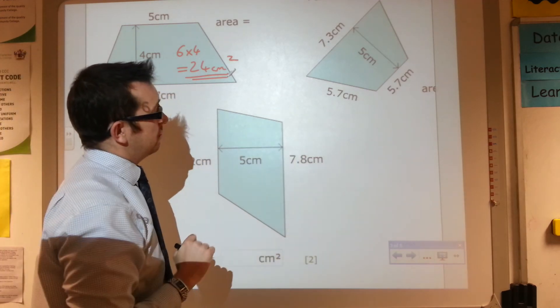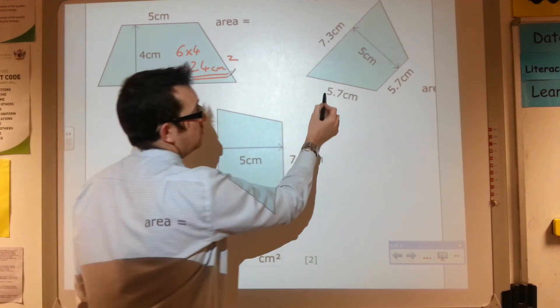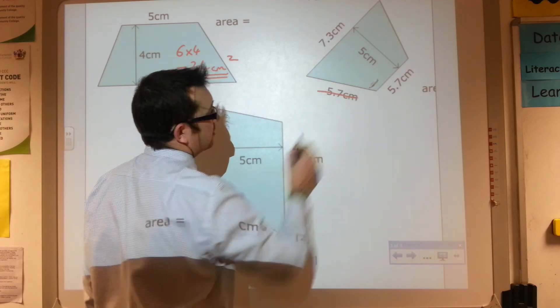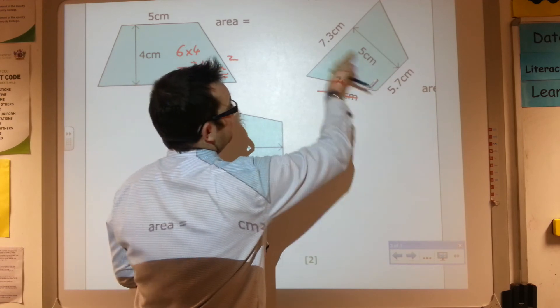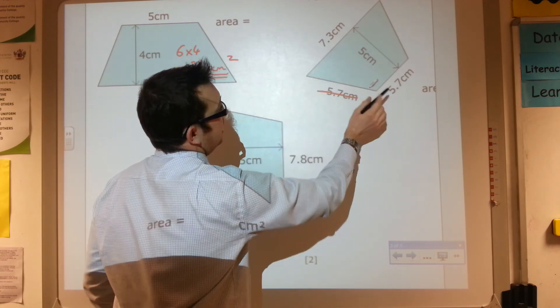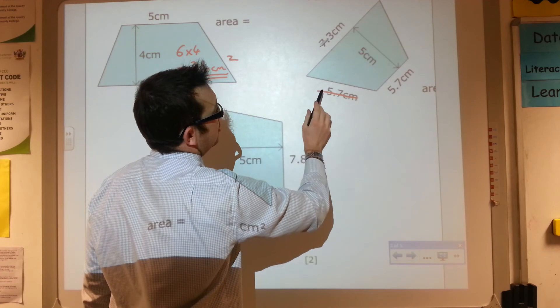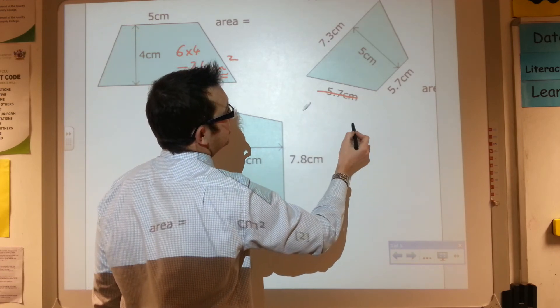Over on the next one up here, it doesn't matter. I don't need to know that that length there is 5.7. That's not a problem. What I do need to do is find the average of 5.7 and 7.3. Well, I think 5.7 and 7.3, I think that's 13 centimeters.